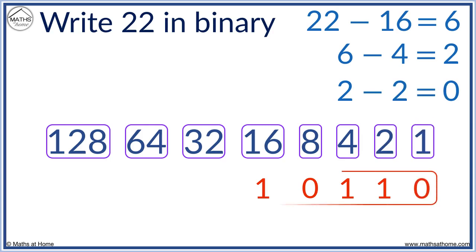22 in binary is 1, 0, 1, 1, 0. 22 is made up of 16 plus 4 plus 2. These are the numbers with a 1 below them.